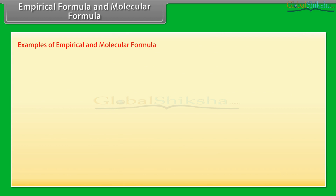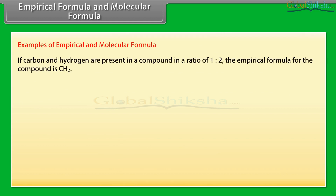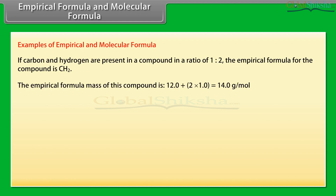For example, if carbon and hydrogen are present in a compound in a ratio of 1:2, the empirical formula is CH₂. The empirical formula mass of this compound is 12.0 plus 2 × 1.0, equal to 14.0 g/mol.